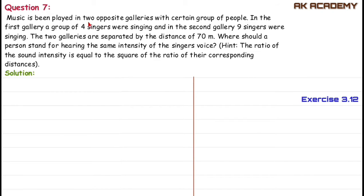Music is being played in two opposite galleries with certain groups of people. In the first gallery, a group of four singers were singing, and in the second gallery, nine singers were singing. The two galleries were separated by a distance of 70 meters. Where should a person stand for hearing the same intensity of the singers' voice? Hint: the ratio of the sound intensity is equal to the square of the ratio of the corresponding distances.